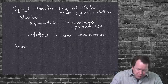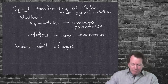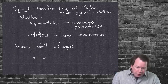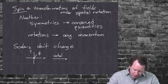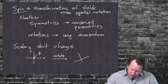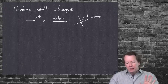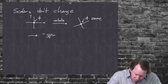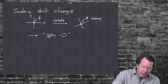Let's go through some examples. Scalar fields — a scalar is just a number at every point in space. Under a rotation, nothing happens to it: the field doesn't care, it's just sitting there. We call this spin zero. It doesn't transform at all under rotations, which pops out of the mathematics.